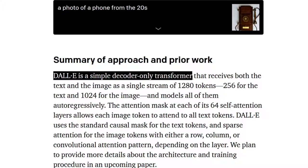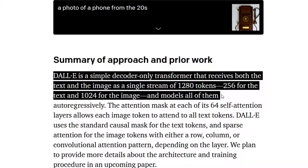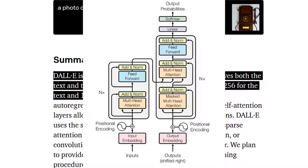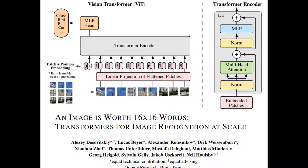This model is a simple decoder-only transformer. Its input is a sequence of up to 1280 tokens, where the first 256 are text and the rest — around 1024 — are for the image. As I mentioned in a previous video, we don't need an encoder-decoder model for sequence-to-sequence tasks. We can just concatenate the input and output into a single sequence and use a decoder-only sequence generator. Now a sentence is a sequence of words, but how is an image a sequence? This paper shows we can treat an image as a sequence of image patches. If the generated image size is 256 by 256 and 1024 patches are generated, then each patch is around 8 by 8 pixels.